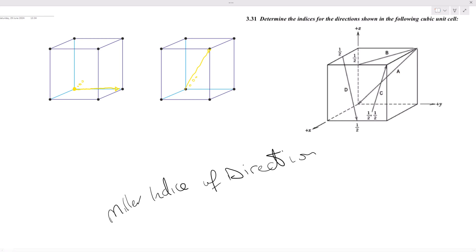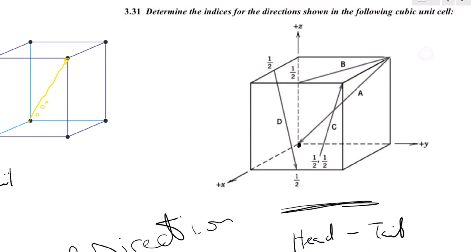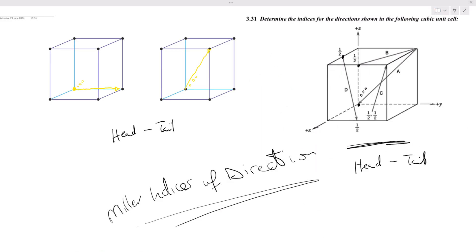Welcome back to the channel. Today we are going to be doing Miller indices for directions. In my previous video I taught how to do Miller indices without applying the formula head minus tail. I came across a question where it is very necessary that we apply the formula — because if you look at the diagram, the origin is at this point, zero zero zero, and all of those directions are not originating at the origin. They begin elsewhere, so it is necessary that we apply the law of head minus tail.